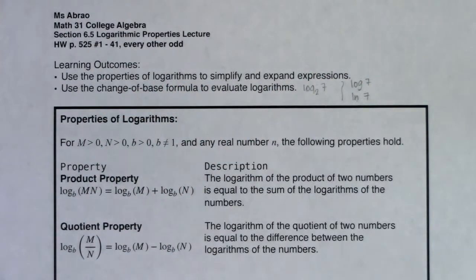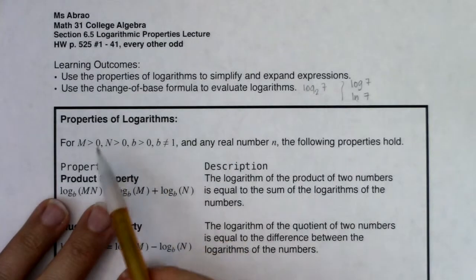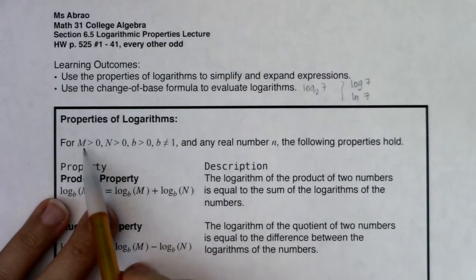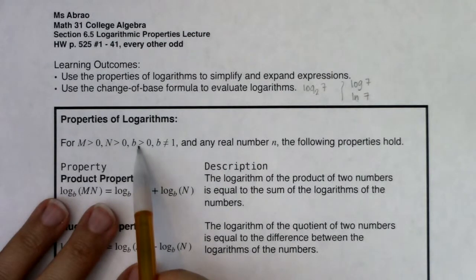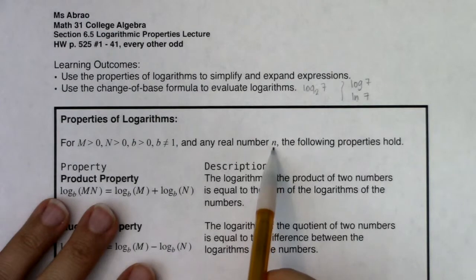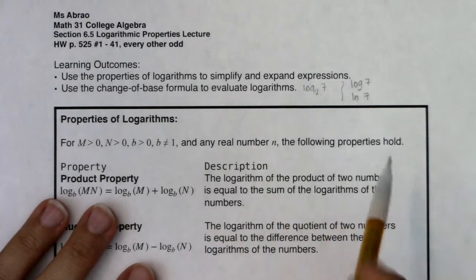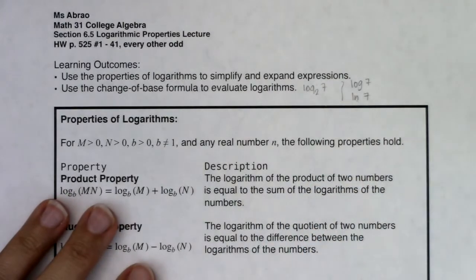Let's talk about our properties of logarithms. There are five of them — two we've talked about briefly before and three we haven't. Assume that m, n, and b are all greater than zero, that the base of your logarithms isn't one, and that n is a real number. Once we have that, the following properties hold.